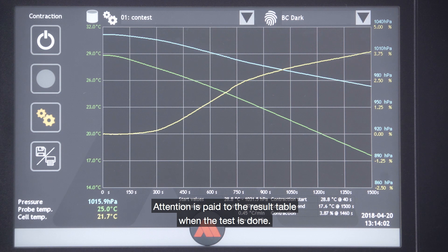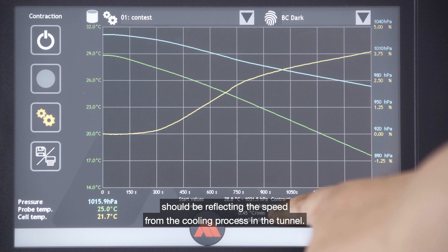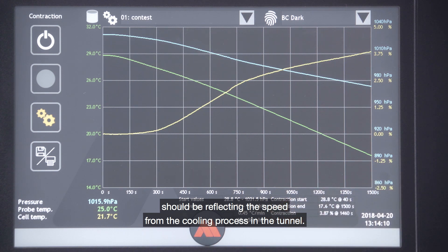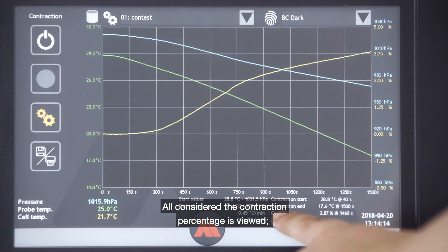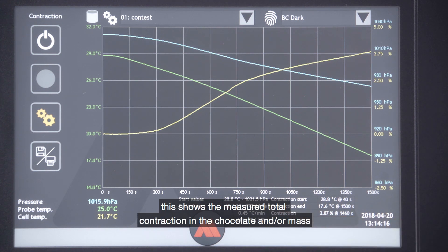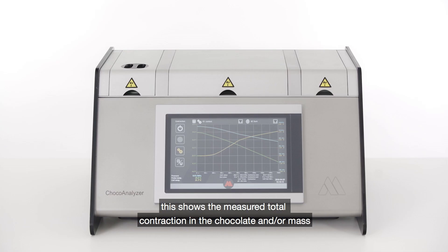Attention is paid to the results table when the test is done. As said, the cooling speed should be reflecting the speed for the cooling process in the tunnel. All considered, the contraction percentage is viewed. This shows the measured total contraction in the chocolate and/or mass and at what time this measurement was achieved.